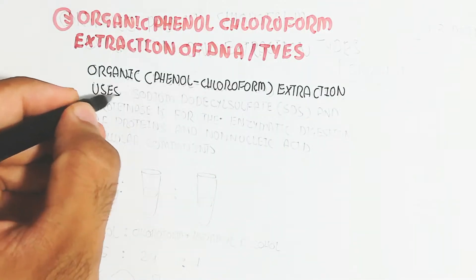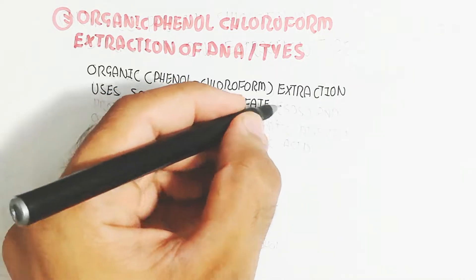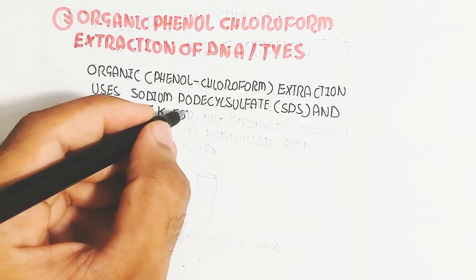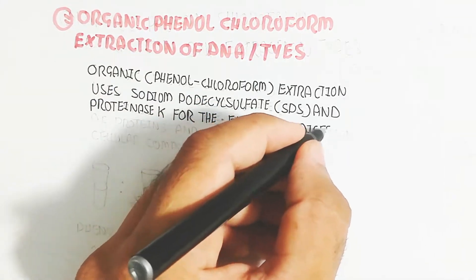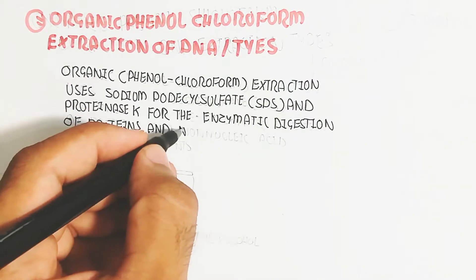The organic phenol chloroform extraction uses sodium dodecyl sulfate, SDS, and proteinase K for the enzymatic digestion of proteins and cellular components. The nucleic acid will not digest in this manner, which is why the extraction is possible.